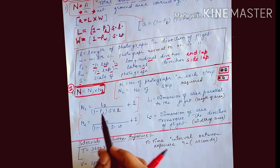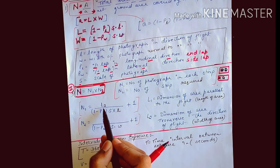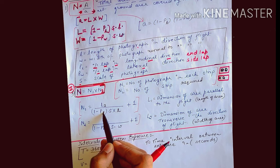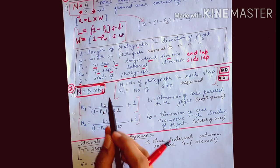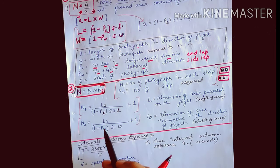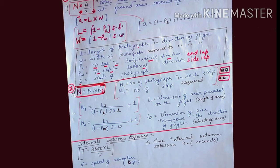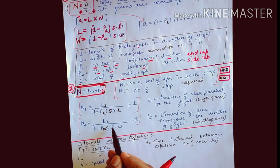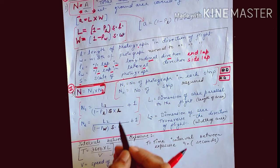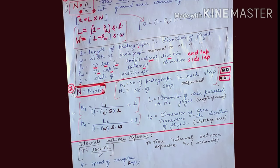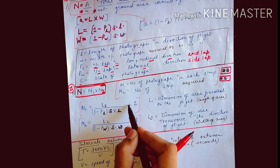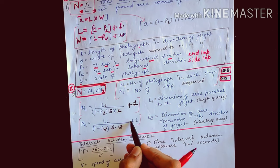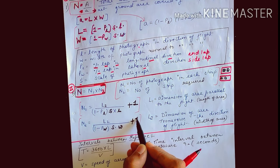The formula for N1 is: N1 = L1 / [(1 − PL) × S × l] + 1, and for N2: N2 = L2 / [(1 − PW) × S × w] + 1. Here PL is end lap, PW is side lap, S is scale, l is length of photograph, and w is width of photograph.